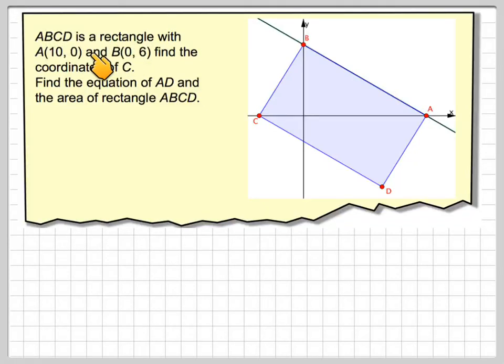ABCD is a rectangle with A(10, 0) and B(0, 6). Find the coordinates of C, find the equation of AD and the area of the rectangle ABCD.